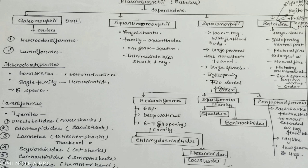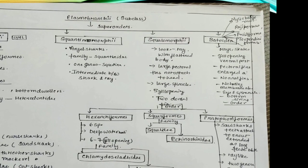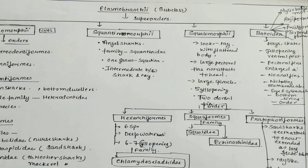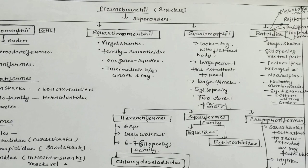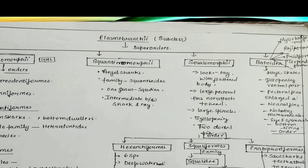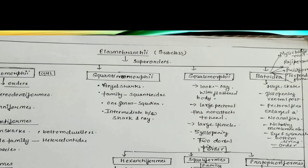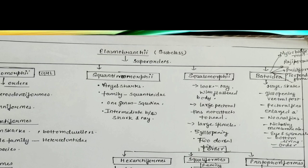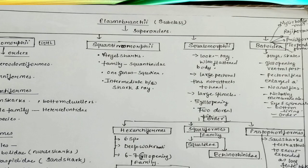These are the orders of Squalomorphy. If we look at Batoidea, that is the rays and skates. Gill openings are ventral in position and the pectoral fins are enlarged. No anal fin are present in Batoidea. Nictating membrane are absent. Eye and spiracles are present. They are bottom living.